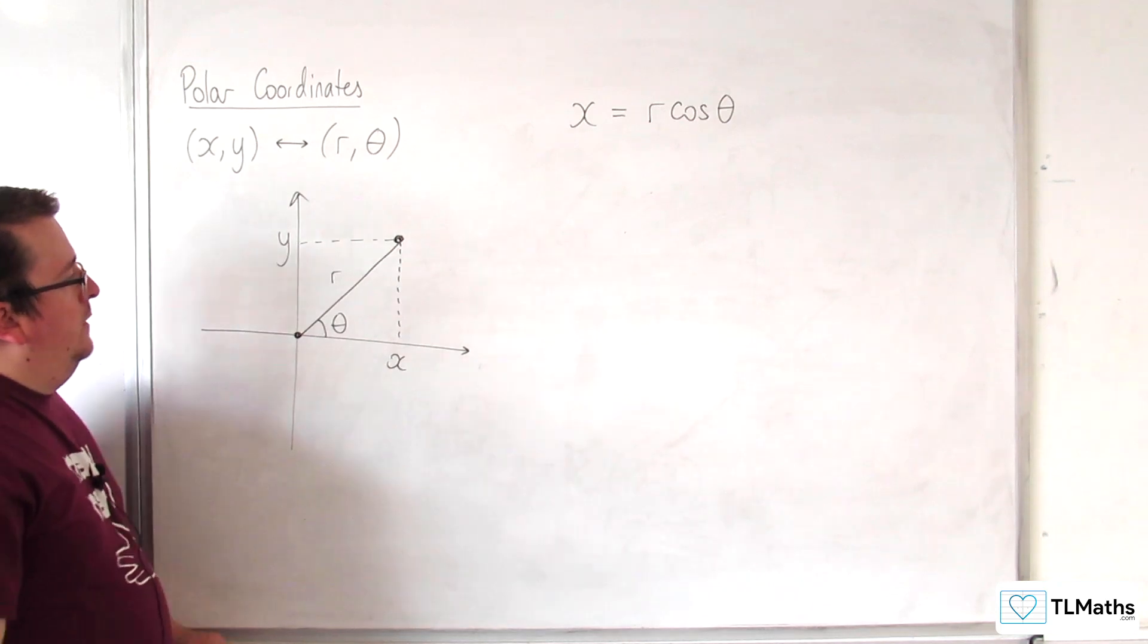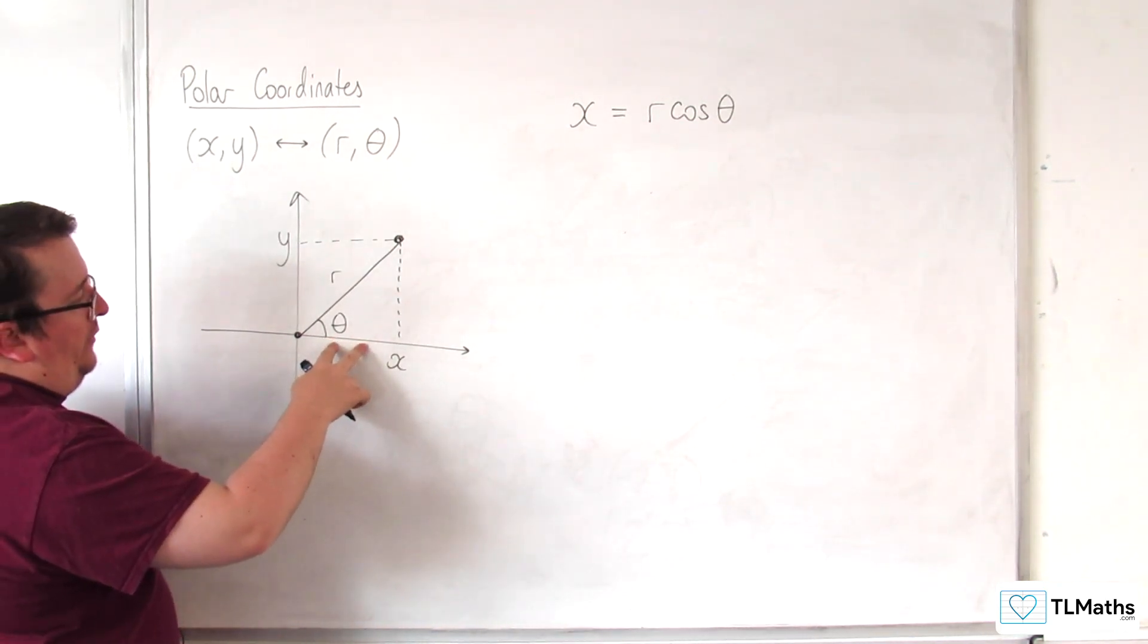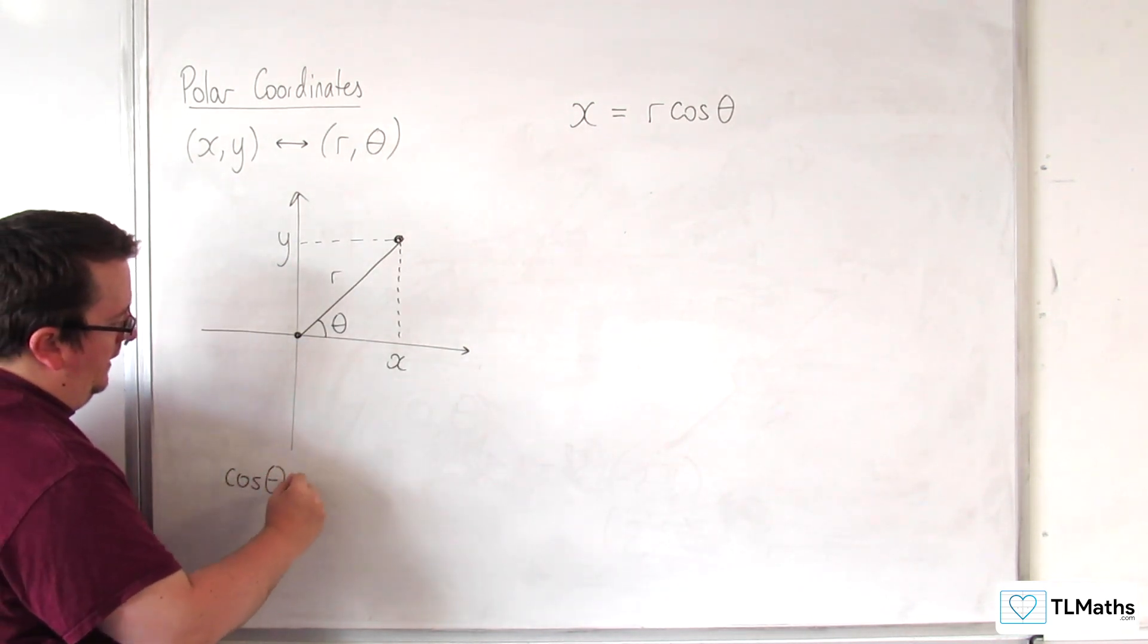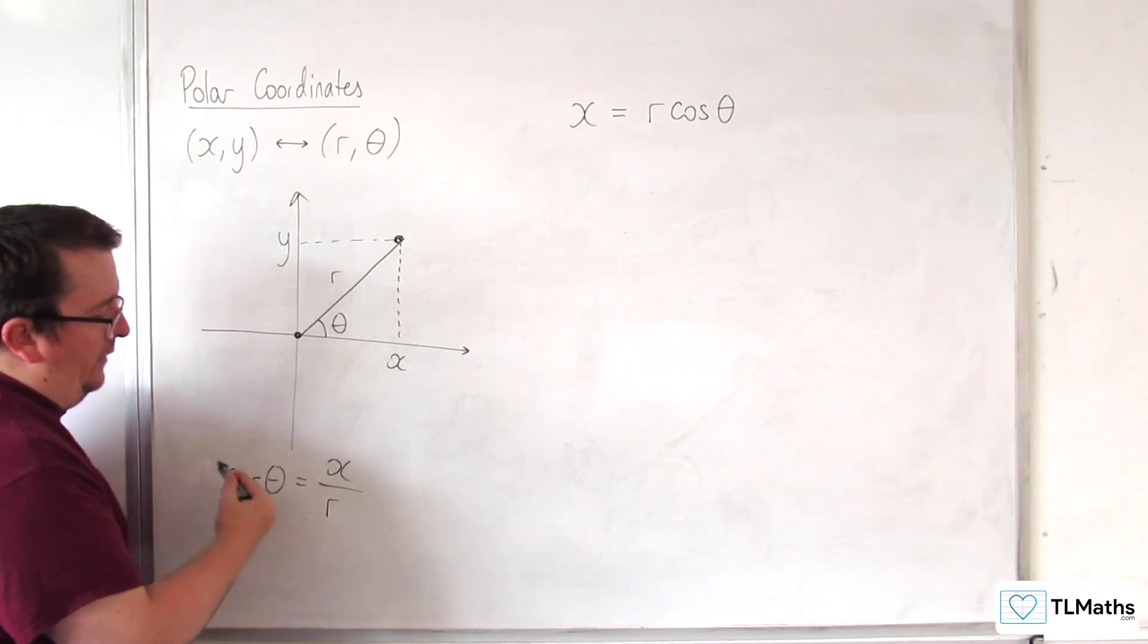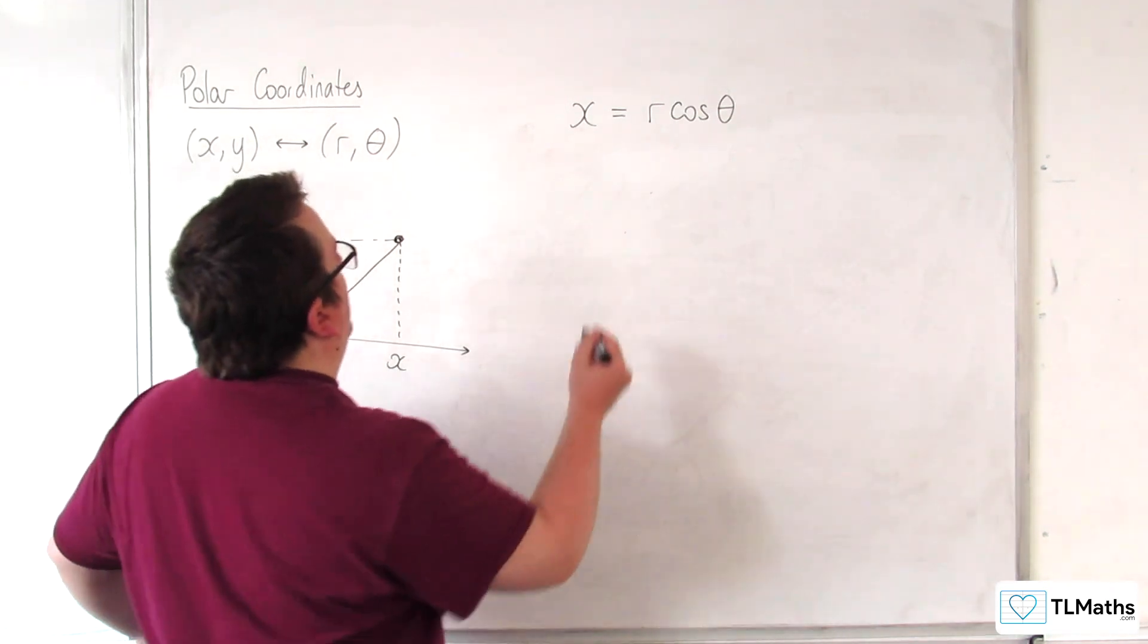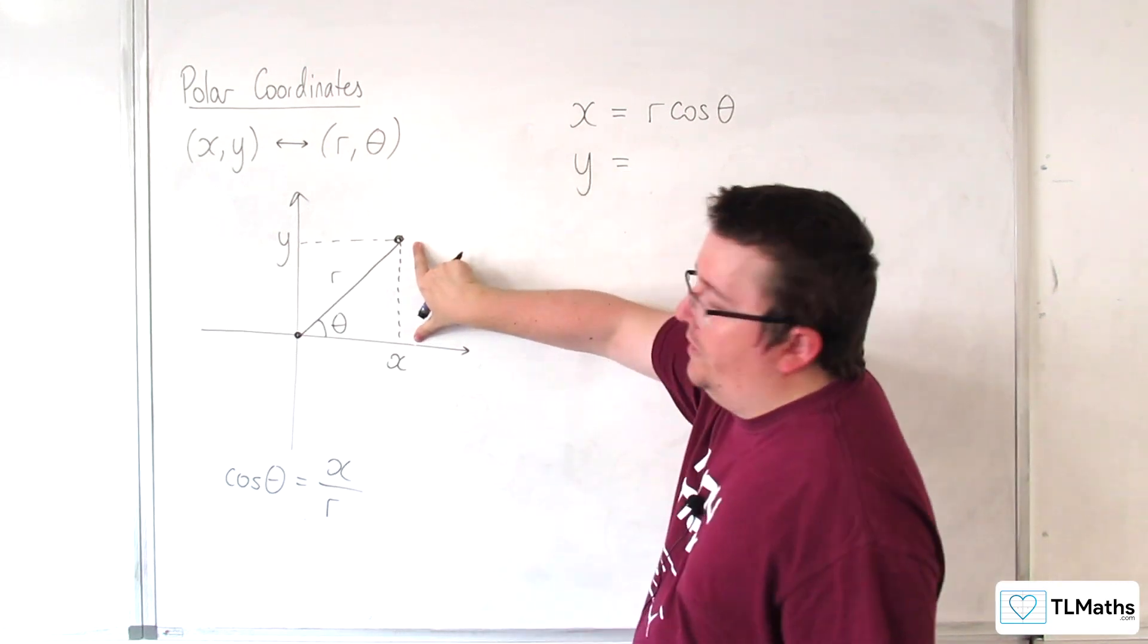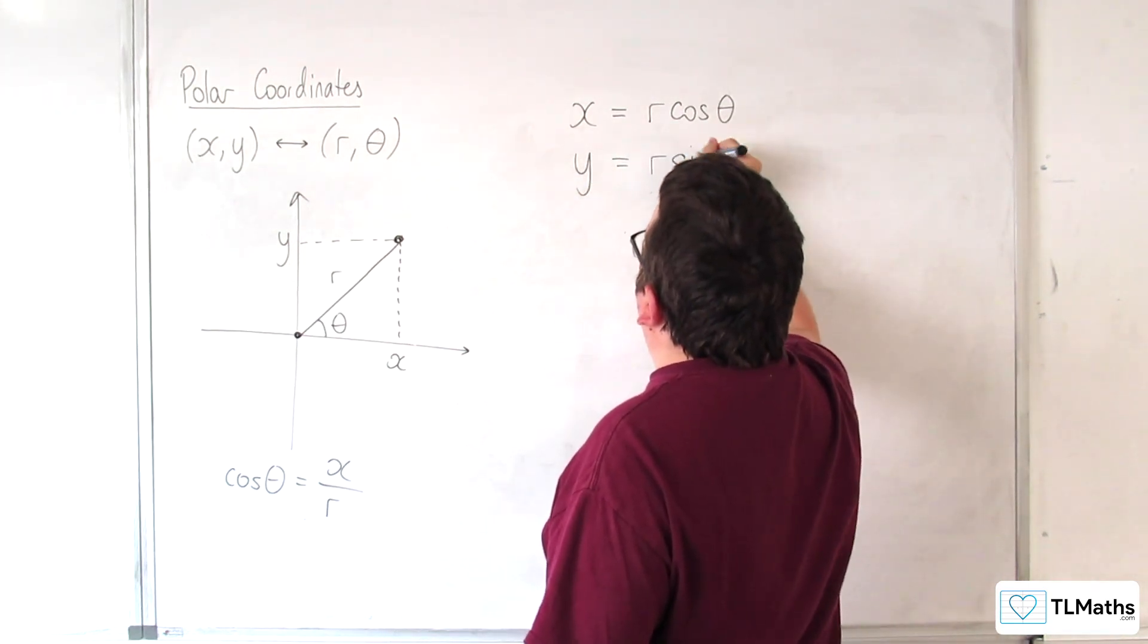So that's coming from this being the adjacent, this being the hypotenuse. We know that cosine of the angle is the adjacent over the hypotenuse, and so X is equal to R cosine theta. And in just the same way, this height of the right-angled triangle is the opposite side. So Y is equal to R sine theta.